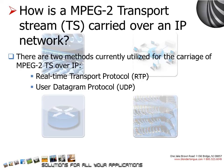How is an MPEG-2 transport stream carried over an IP network? Currently, there are two methods that can be utilized for the carriage of MPEG-2 transport stream over IP. First is Real-time Transport Protocol, that is RTP, and second is the User Datagram Protocol, that is UDP.